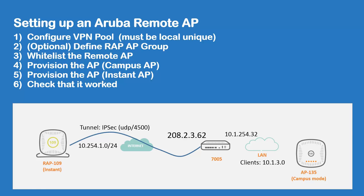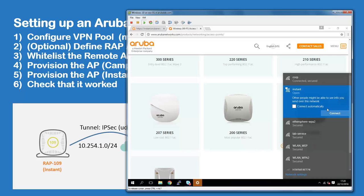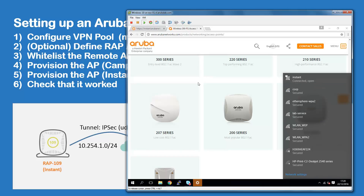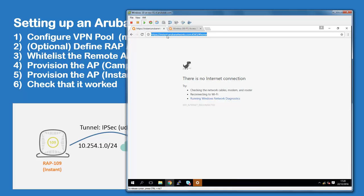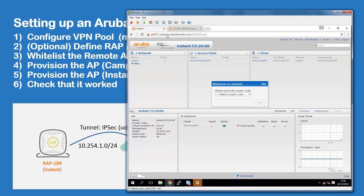Now let's do the situation where we have a remote access point that comes out of the factory as an Instant AP — we can convert that as well. On my Windows system I fired up the Instant access point, the RAP 109. If I'm connected, I can go to instant.arubanetworks.com. With admin/admin we do the default log on. Since I'm in the Netherlands I pick that country code. From here we can configure all the Instant access points, but the only thing we're going to do is convert it to a remote access point.